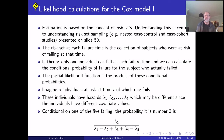Turning to likelihood calculations for the Cox model, which leads naturally to nested case-control studies. A key concept is risk sets. The risk set at each failure time is the collection of subjects at risk of failing at that time. In theory, only one individual can fail at each failure time. We calculate the conditional probability of failure for the subject who actually failed, and the partial likelihood is the product of these conditional probabilities across all observed event times.